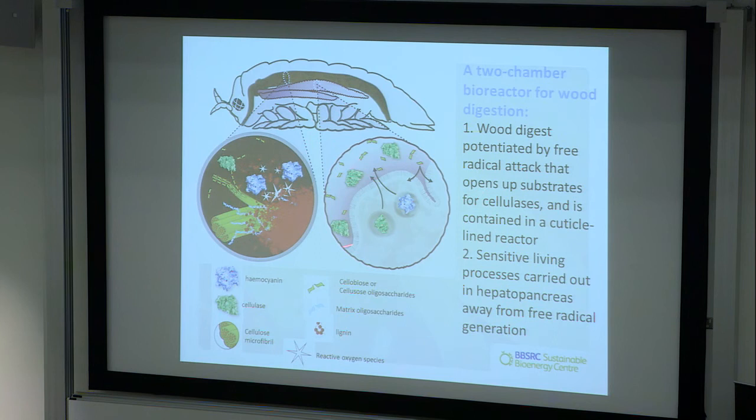This is our model for how this works. It's a two-chamber reactor. You've got a cuticle-lined hindgut protecting the tissues from the rather aggressive chemistry going on in here—free radical chemistry catalyzed by hemocyanins breaking open the structure of the lignin and also helping to break open the structure of the cellulose. Then you've got cellulases coming in and depolymerizing the cellulose. In the other organ, you've got these more sensitive living processes that are protected from that free radical chemistry, producing enzymes and absorbing the sugars. The reason that there's no microbes in the system we're fairly confident is because of that aggressive chemical environment.